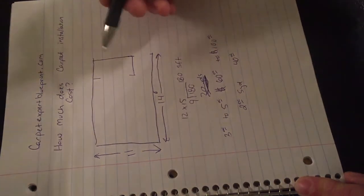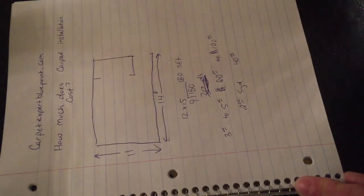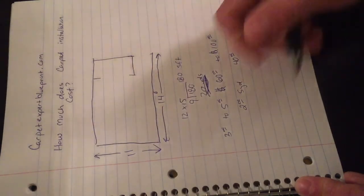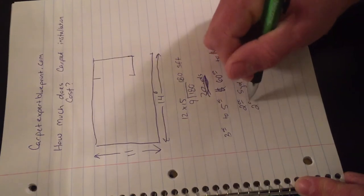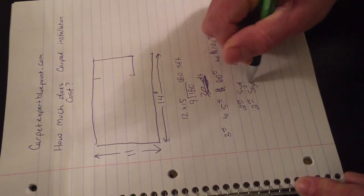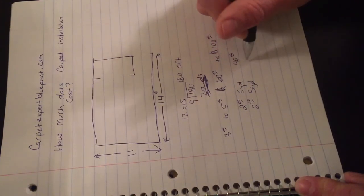And then if you say you know what, I got a bed, I got a dresser, I got a TV in here, I don't want to deal with that either, let's have the installer handle that as well, figure another $2 per yard for that to have them handle the whole deal.